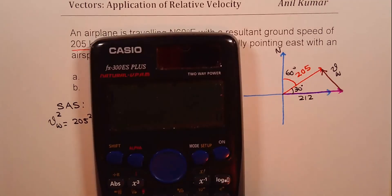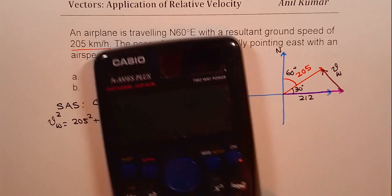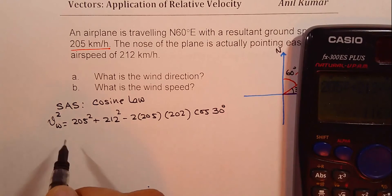Now, let us calculate this. So first, our calculator should be in degrees. And now, let us calculate this answer. 205 square plus 212 square minus 2 times 205 times 212 times cos of 30 degrees is equal to a big number, which is 11694.